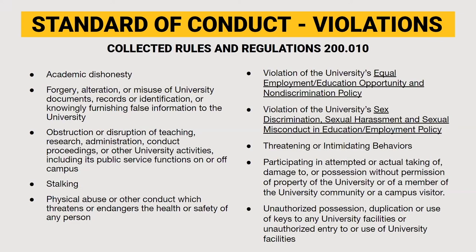There are many things that are considered violations of the collected rules and regulations. Some of these violations include academic dishonesty, forgery, stalking, and damage of university property. All members of an organization should adhere to the standards of conduct. As representatives of your organization, if more than one individual is found in violation of the following offenses, then the organization may also be at risk for violating the standard of conduct.